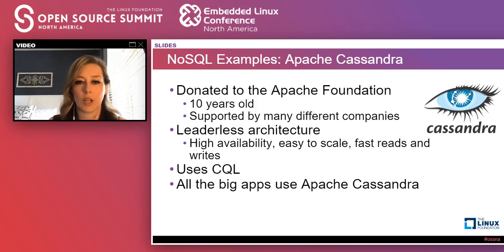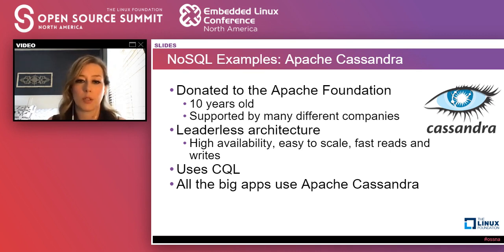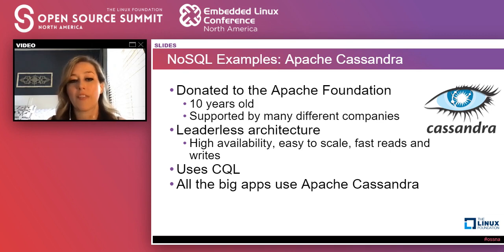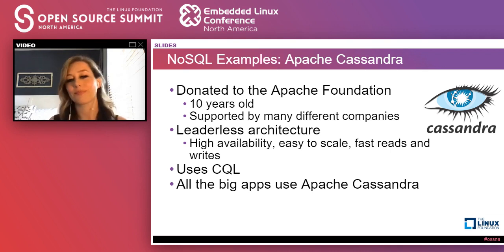Apache Cassandra was donated to the Apache Foundation roughly 10 years ago. It's supported by many different companies, has a leaderless architecture providing high availability and easy scaling, uses CQL, and underpins many of the big apps you have on your phone — Netflix, Twitter, Uber — all use Apache Cassandra to serve those applications.